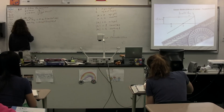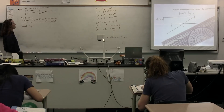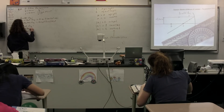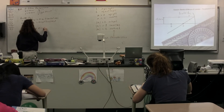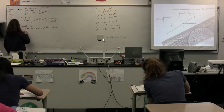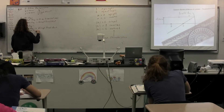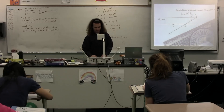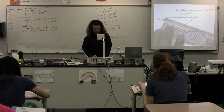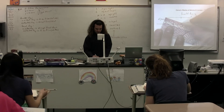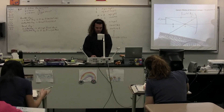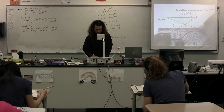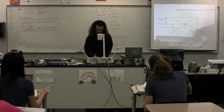Next, we're going to draw the focal ray. The focal ray is the reverse of the parallel ray — the incident ray goes through the focal point, and the reflected ray is parallel to the principal axis. So from the top of the object through the focal point, that's the incident ray, and the reflected ray goes parallel to the principal axis.